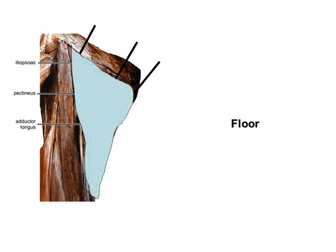The femoral triangle is shaped like the sail of a ship, and its boundaries can be remembered by using the mnemonic SAIL — namely Sartorius, Adductor longus, and the Inguinal Ligament.